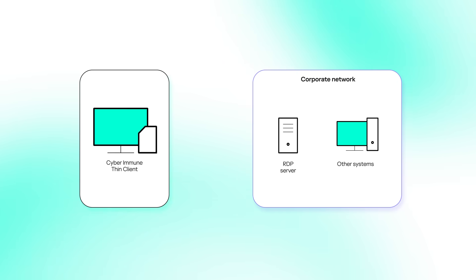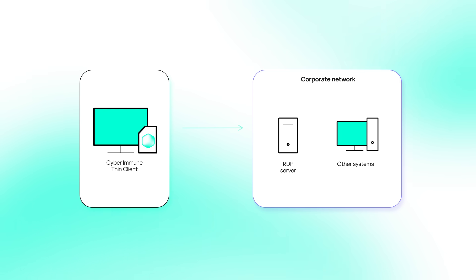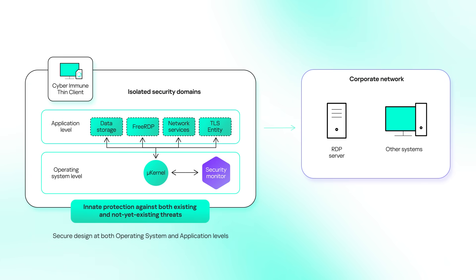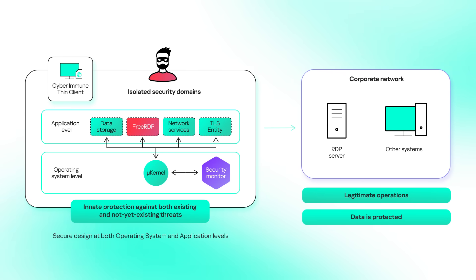In the case of a Thin Client, the cyberimmune approach allows us to guarantee the protection of its core value — a secure connection to a remote server. Specifically, due to its secure design, even hacking one component of a Thin Client will not lead to a violation of its critical properties. In this way, we are able to neutralize a significant proportion of attacks aimed at Thin Clients and, as a result, at entire companies.